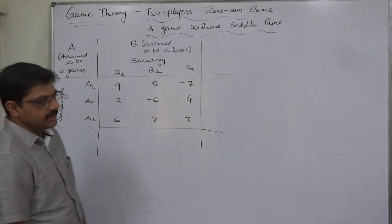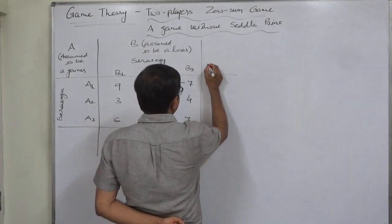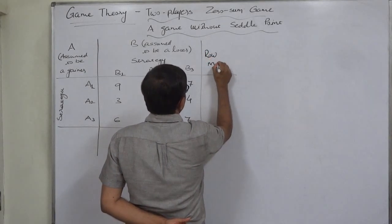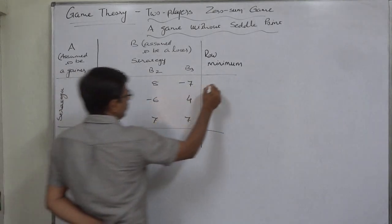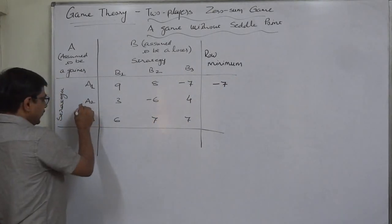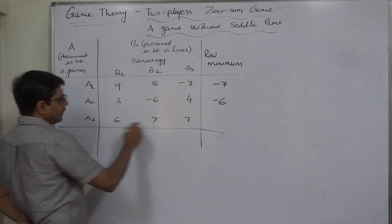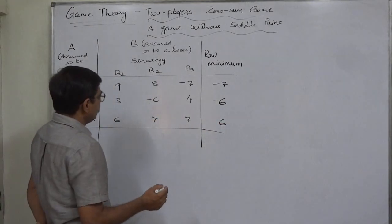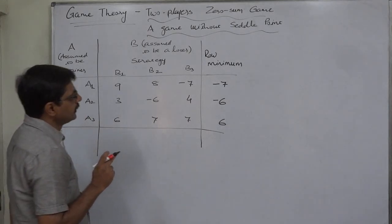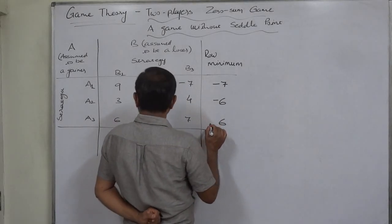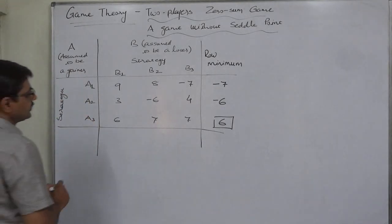First, let's try to find out the saddle point. For that purpose, we have to find the row minimum. In the first row A1, the minimum is minus 7. In the second row A2, the minimum is minus 6. In the third row A3, the minimum is 6. Out of all these minimum values, we need to find the maximum value, which is 6.